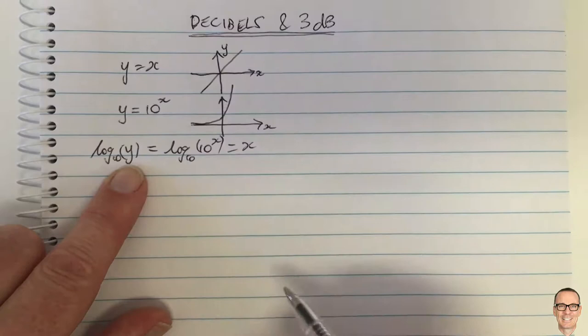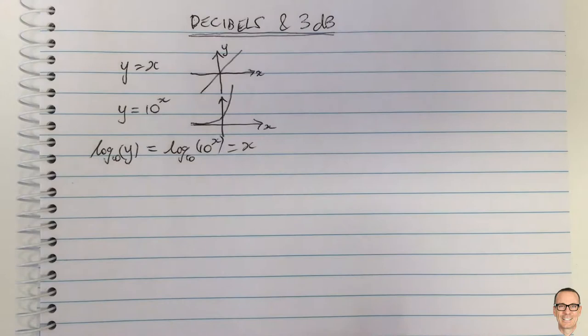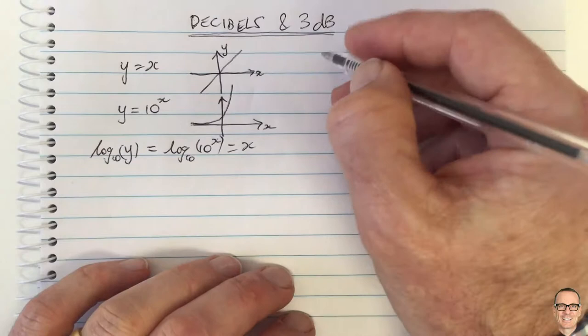So if you plotted log to the base 10 of Y on the vertical then you would have a linear relationship in your plot and you'll be able to get more information. That's one interesting use of a log function.